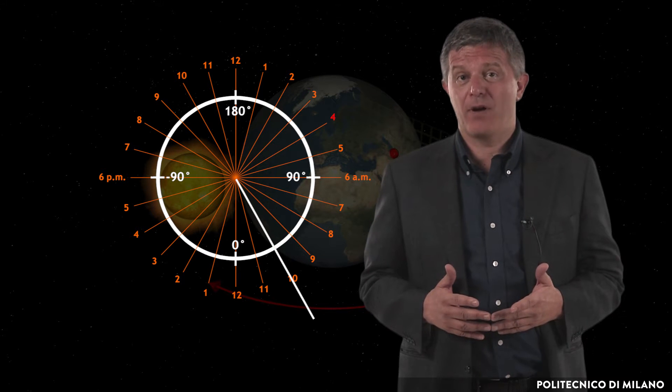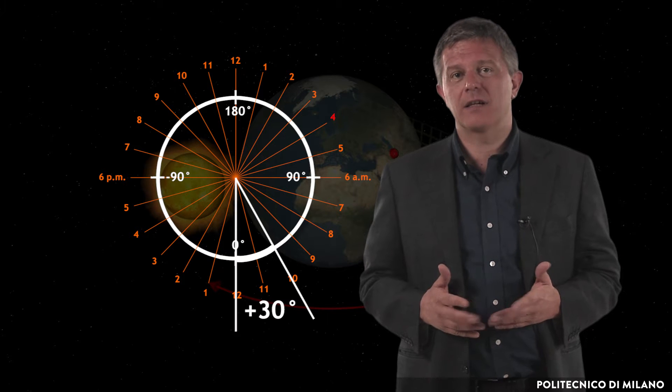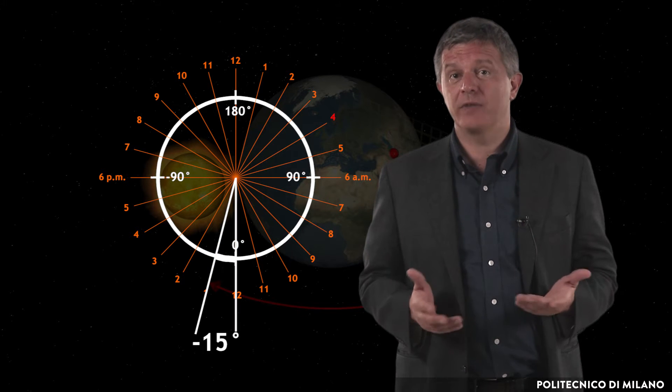For example, at 10 am, omega is plus 30 degrees. At 1 pm, omega is minus 15 degrees.